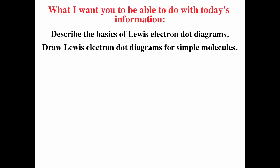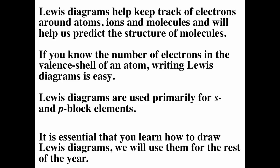After watching this video, you should be able to describe the basics of Lewis electron dot diagrams and draw them for simple molecules. Lewis diagrams help keep track of electrons — where they are and whether they are bonding or non-bonding electrons. If you know the number of valence electrons, writing Lewis diagrams is fairly easy. Lewis diagrams are just about the valence electrons; we completely ignore the core electrons.